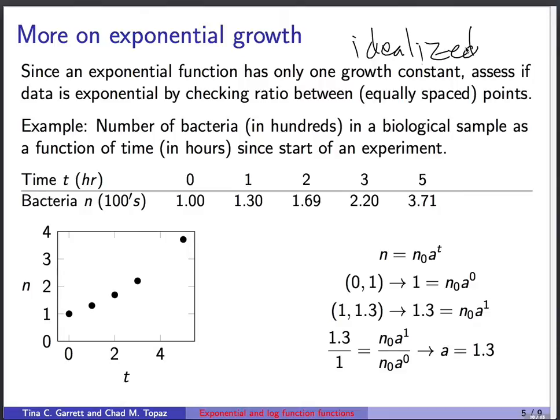For this example, consider the number of bacteria in a biological sample as a function of time since the start of the experiment. The independent variable is time t in hours. The dependent variable is the number of bacteria n in 100s. We get some data here. We might go ahead and plot it, n versus t. It looks like this. Maybe an exponential model's in order. So we're going to start testing some data. We're going to choose a pair of points. The first pair of points I'll choose is these.